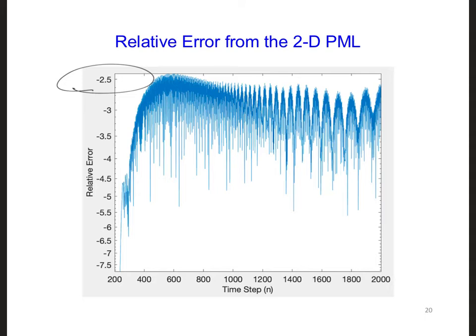However, it turns out that it's really challenging to properly absorb waveguide modes. So the reason our PML doesn't work super well is because we're modeling a waveguide. What can we do about this?